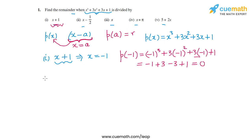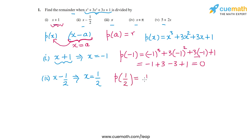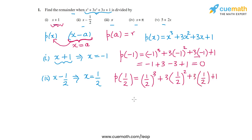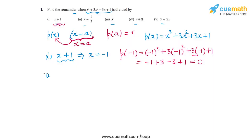Now for the second part, we are dividing p(x) by (x - 1/2). The zero of (x - 1/2) is x = 1/2, so we need to find p(1/2). So p(1/2) = (1/2)³ + 3(1/2)² + 3(1/2) + 1. The divisor polynomial is (x - 1/2) and its zero is x = 1/2.